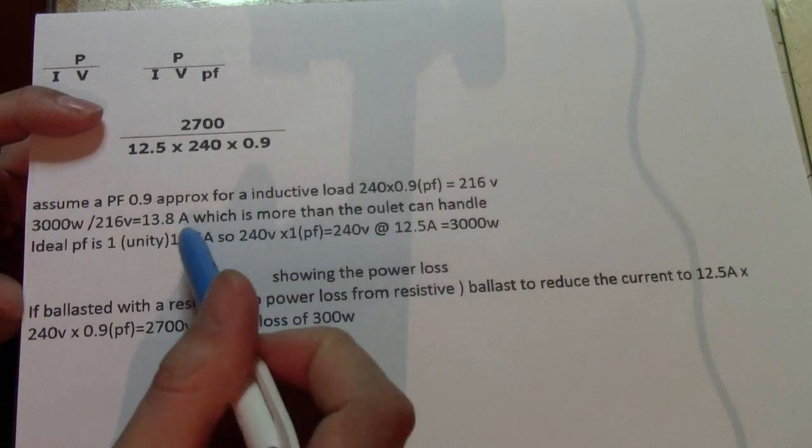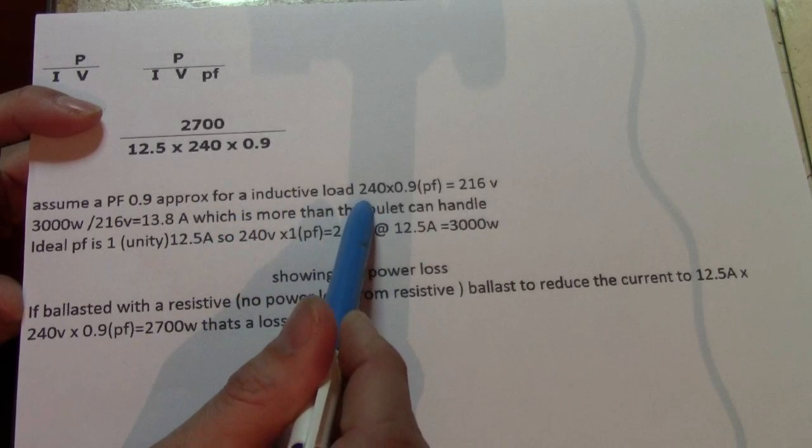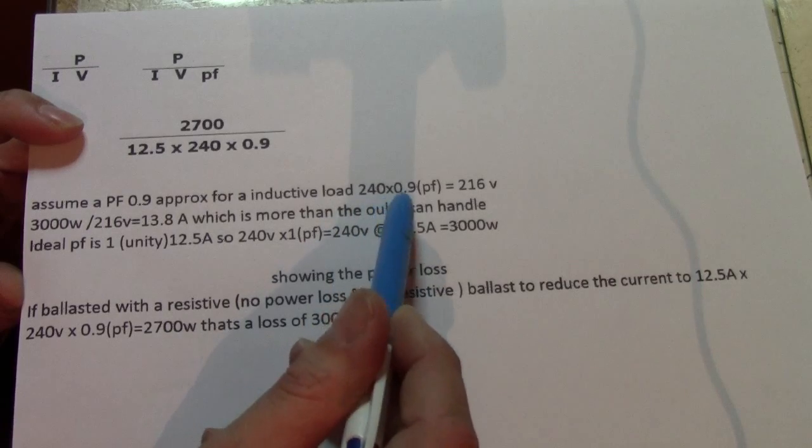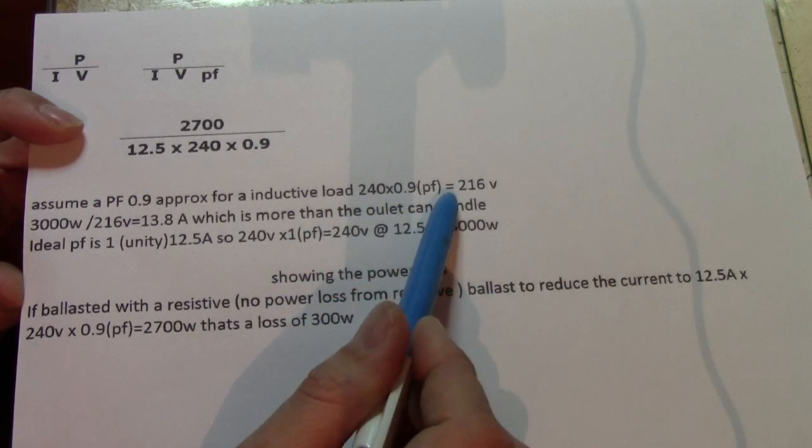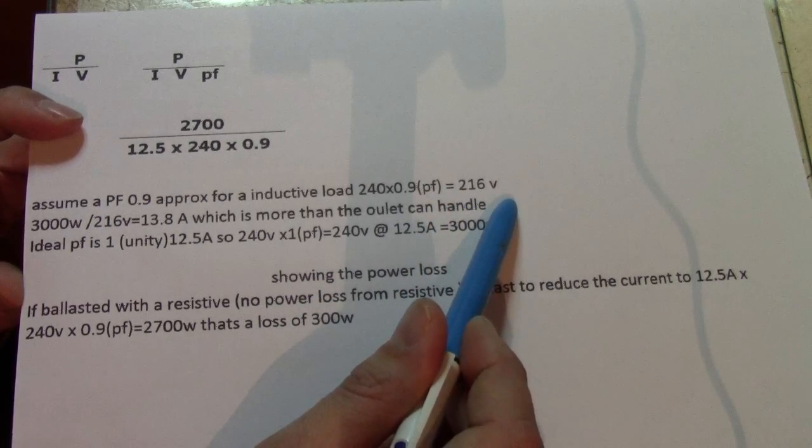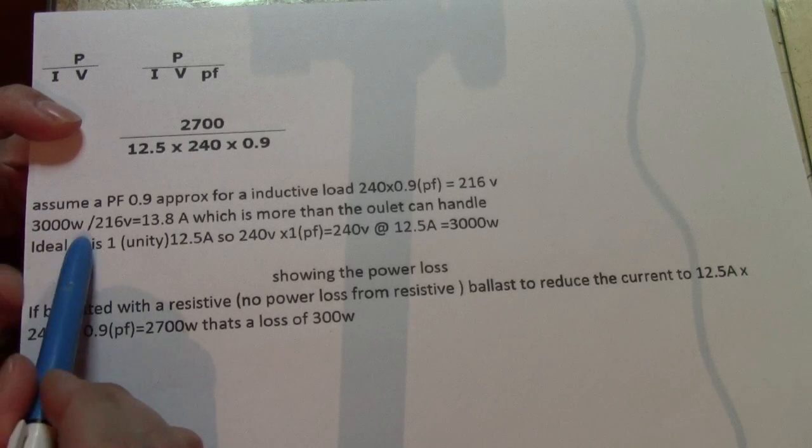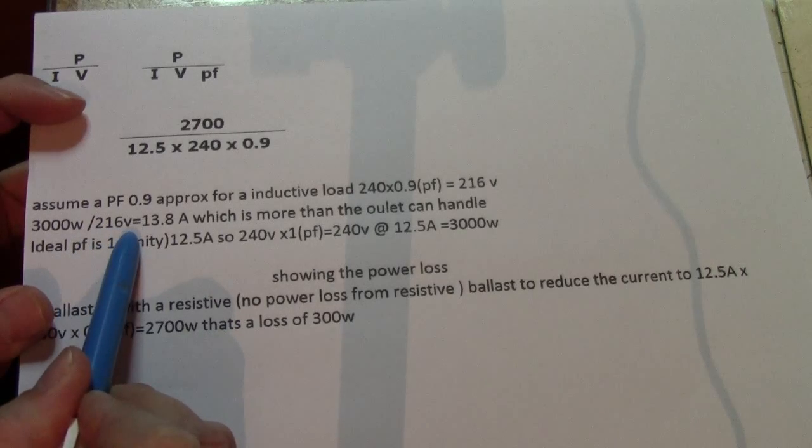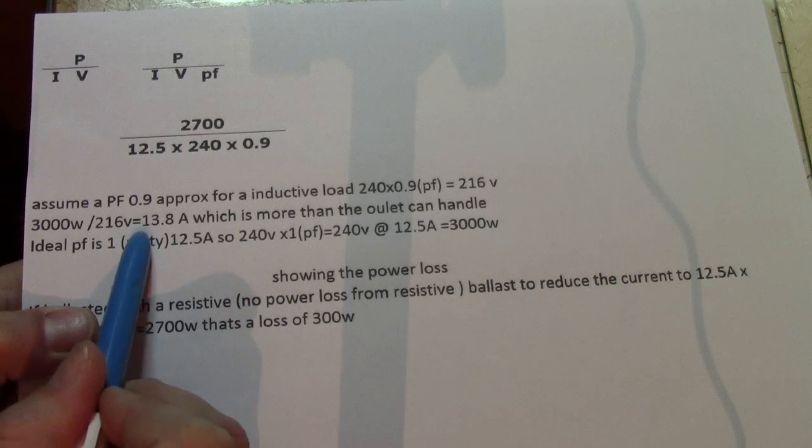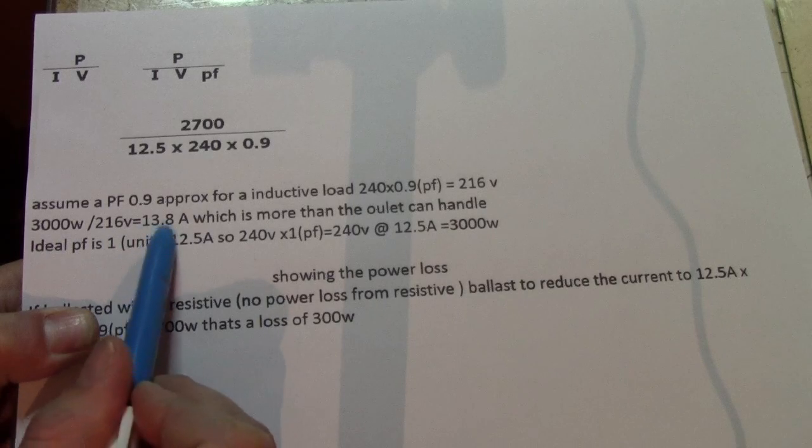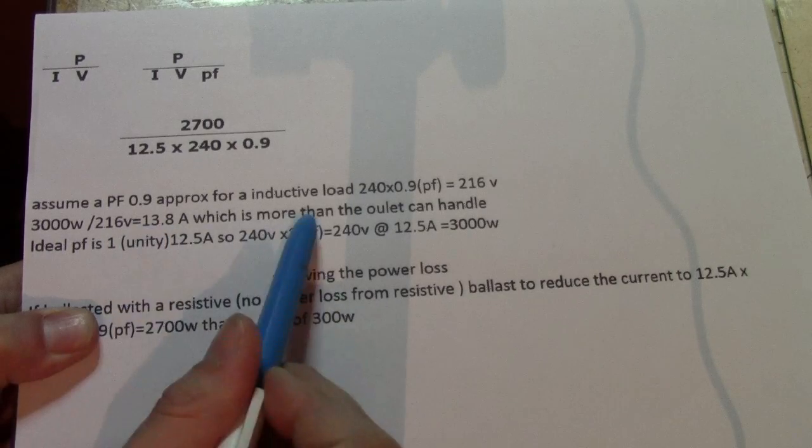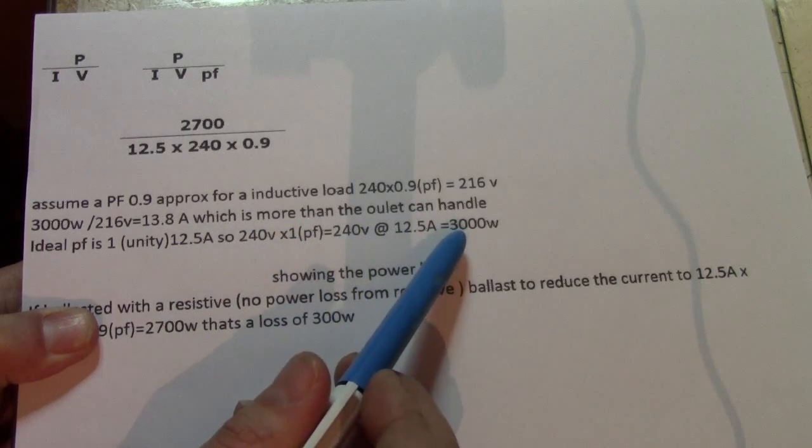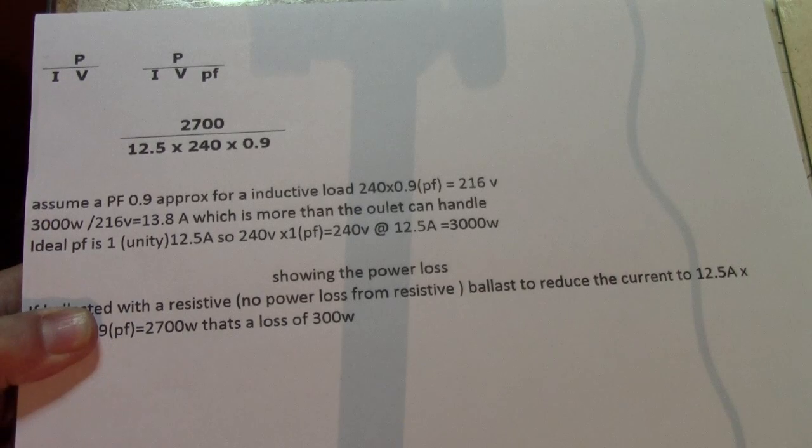So, we have 240, which is your volts, times 0.9, which is your Power Factor, which gives us 216 volts. So, 3000 watts divided by 216 volts gives us our amps. And that is 13.8. We can only get 13 from our plug sockets. So that's why it's dangerous to not use it if you're running a 3000 watt load. It's more than the outlet can handle. Yes, you can upgrade to 32 amp sockets, like I've done. But still, there's a good reason for doing it, because we get power loss.